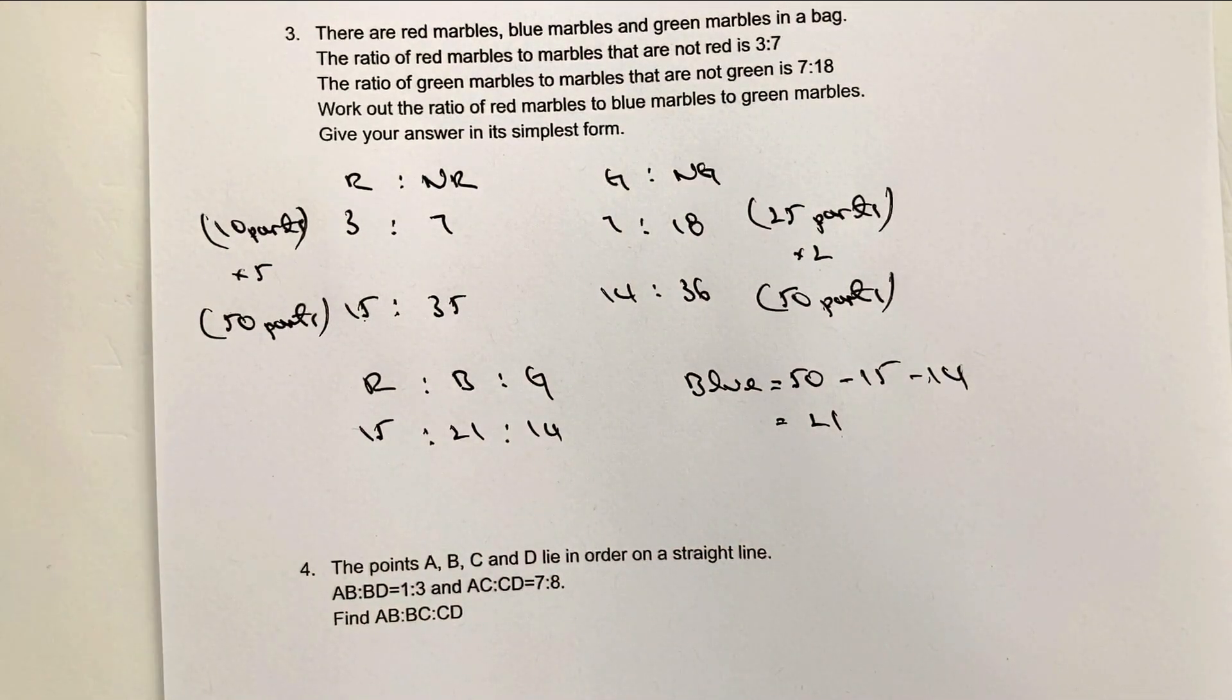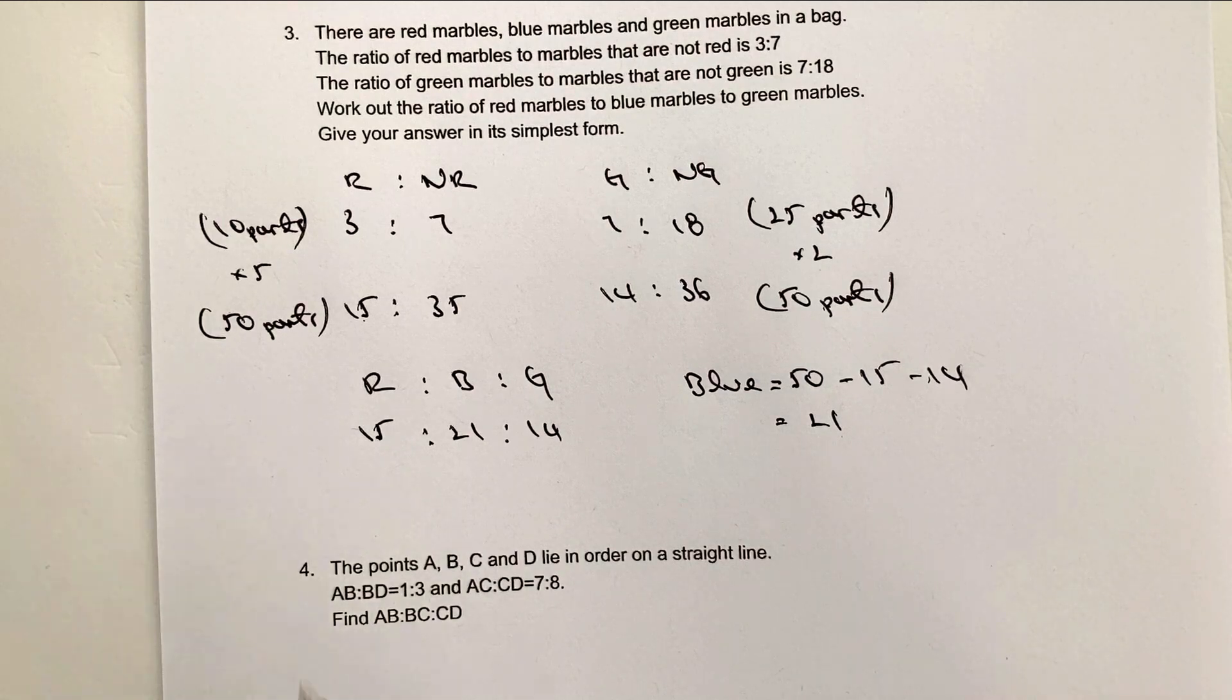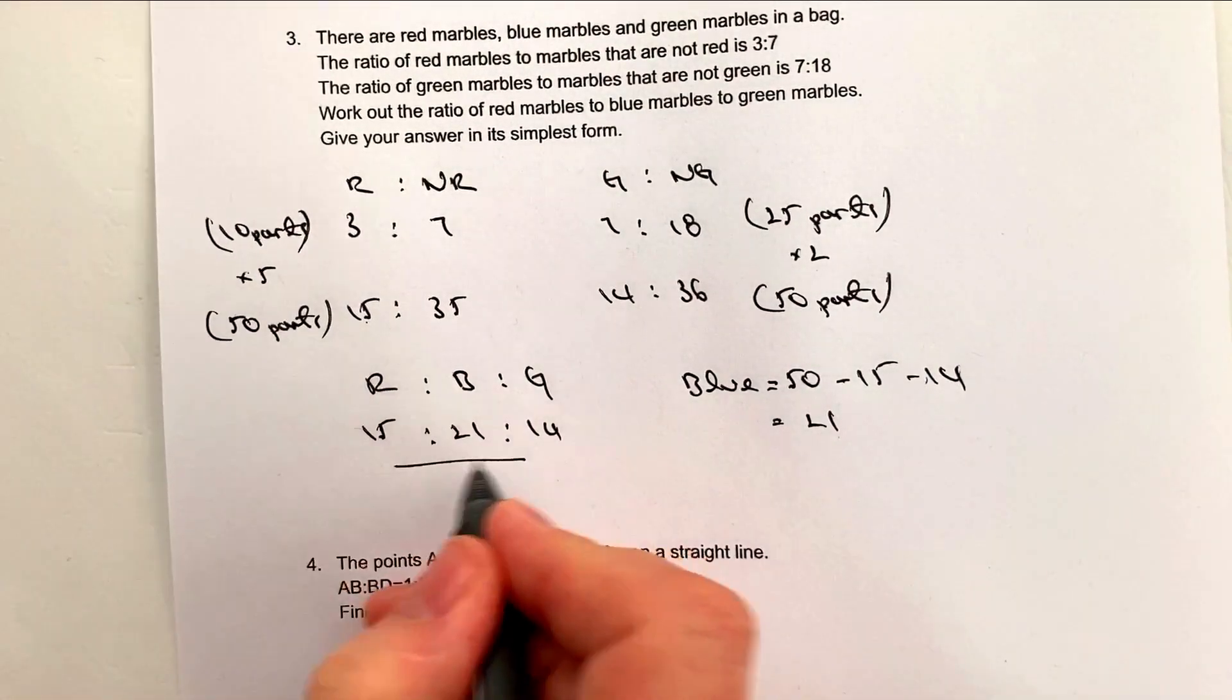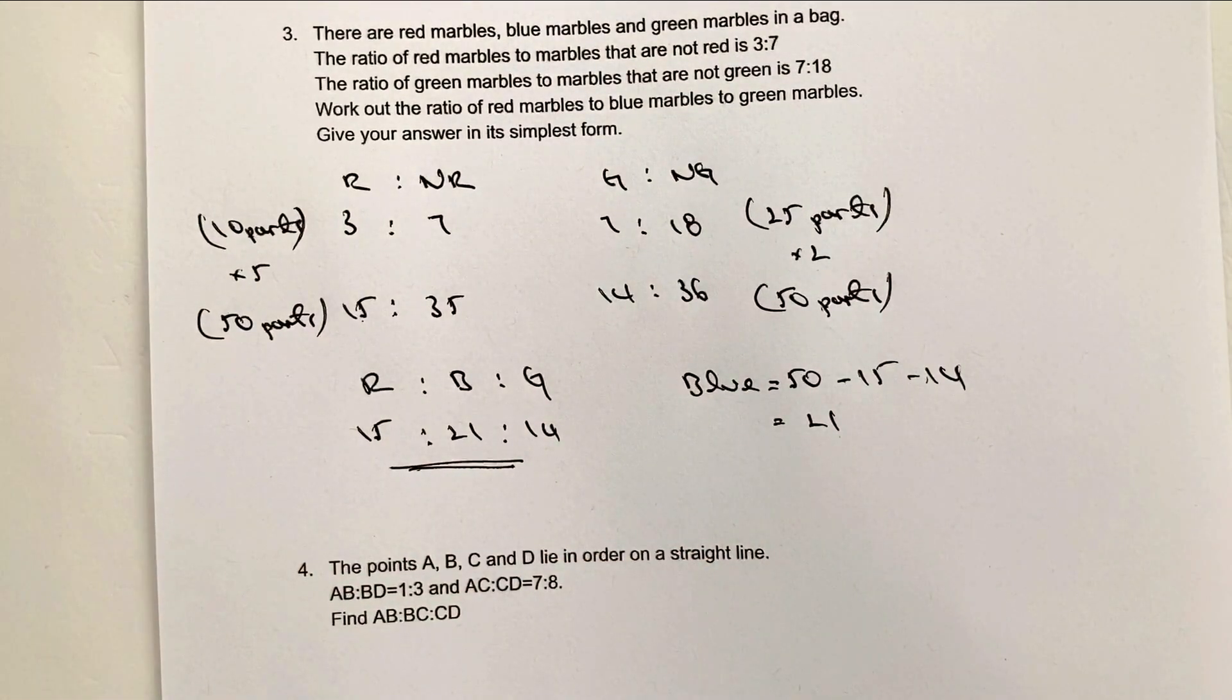So blue would be 21, red would be 15, and green would be 14. And that would then be, if you want to add those all up together, you will get 50 all together. So in this particular case now we know that that is the ratio of red to blue to green marbles.